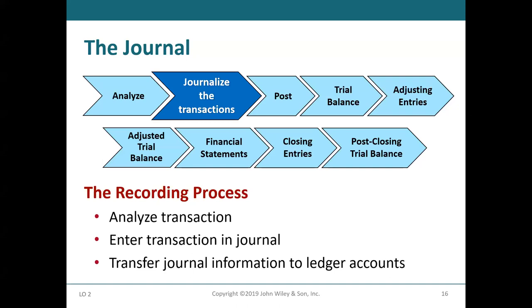Let's continue with the recording activity. The first step in analyzing the transaction is to identify which event we should record. The next step is to journalize the transaction, meaning we're going to record the transaction into the journal. Then we post to the ledger, prepare the trial balance, and so on. We'll learn all these steps throughout accounting principles one.